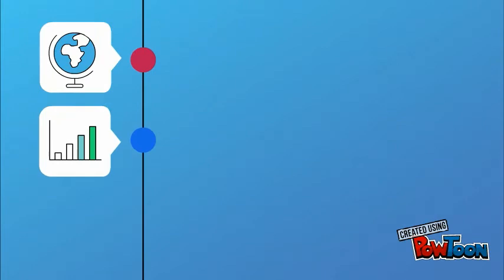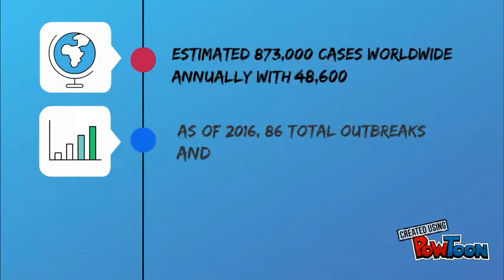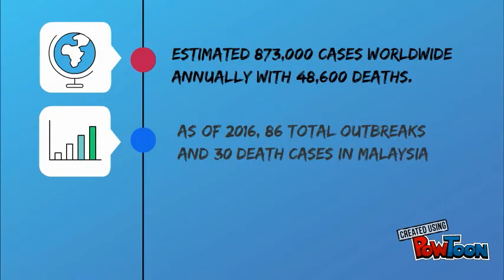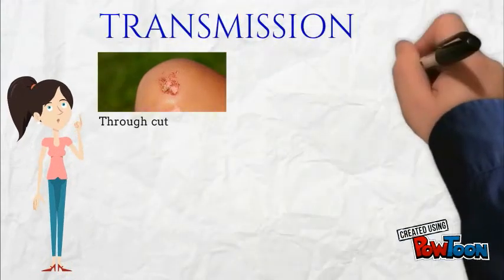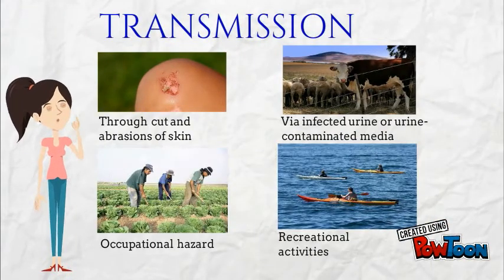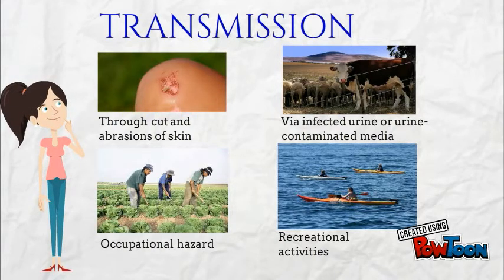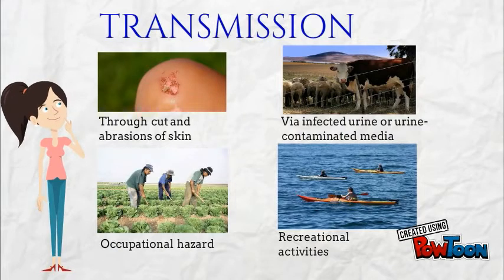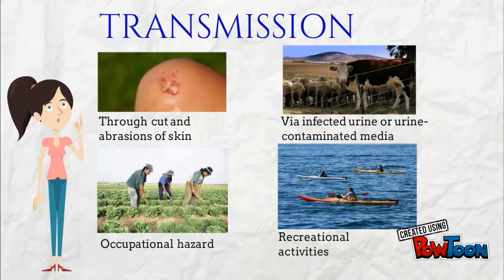These are the estimations of cases occurring worldwide annually, and there were 86 outbreaks and early death cases in Malaysia as of 2016. Leptospirosis can be transmitted to humans through cuts and abrasions of the skin, or through the mucous membranes of the eyes, nose, and mouth via contaminated water. An individual can be infected when in contact with infected organisms, infected urine, or contaminated media such as food or animal bathing areas.